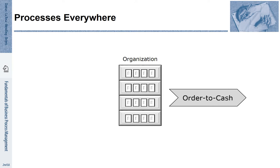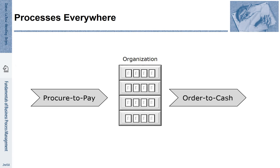Commercial organizations also spend their money on various things. The way how they buy is called the purchase-to-pay process. These two processes are the most important and very generic processes of commercial organizations.